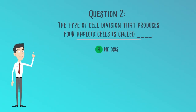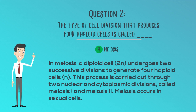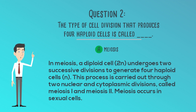The correct answer is A. Meiosis. In meiosis, a diploid cell undergoes two successive divisions to generate four haploid cells. This process is carried out through two nuclear and cytoplasmic divisions called meiosis I and meiosis II. Meiosis occurs in sexual cells.